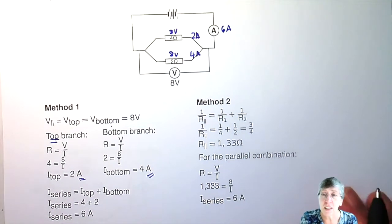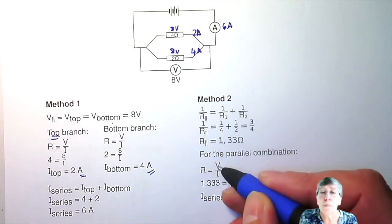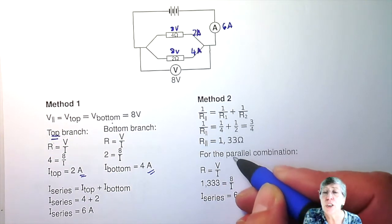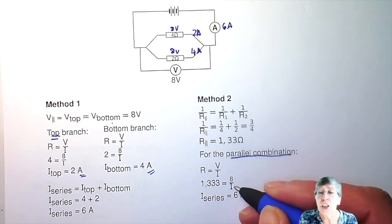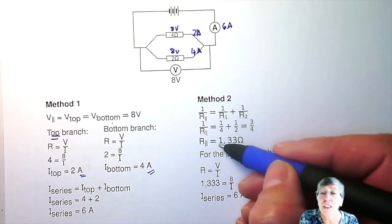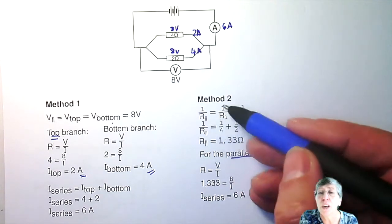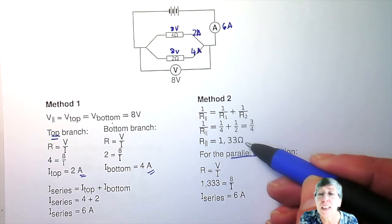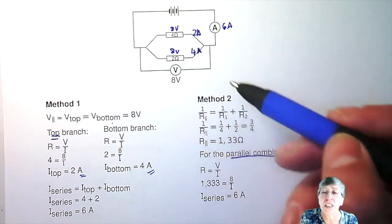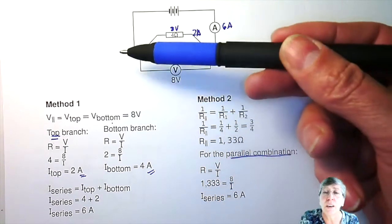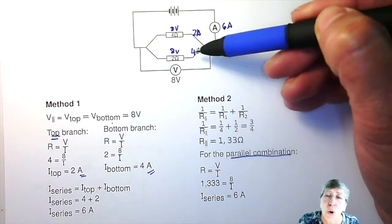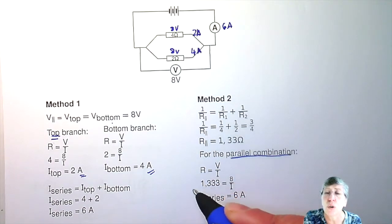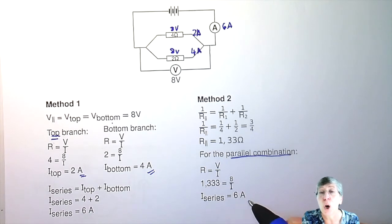Now that's the first method. The second method is to use Ohm's law for the whole parallel combination. If you want the current through the whole parallel, you need the whole parallel resistance. Since they're in parallel, use 1 over R equals 1 over R1 plus 1 over R2 — remember to turn it upside down. That combination of resistors can be replaced with a single equivalent of 1.33 ohms, and then using Ohm's law gives you the whole current for the parallel combination.